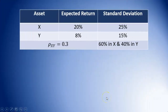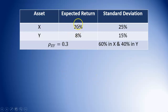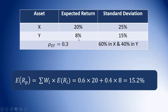First we're going to calculate the expected return for the portfolio with 60% invested in X and 40% invested in Y. We're taking 60% of the 20% return plus 40% of the 8% return. So: 0.6 times 20 plus 0.4 times 8, and that gives me 15.2%.